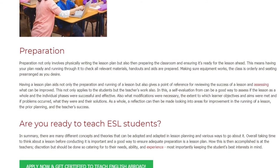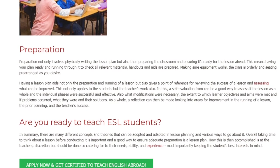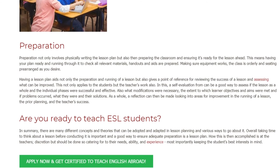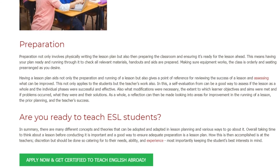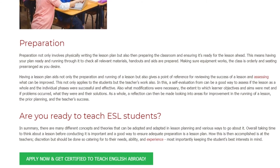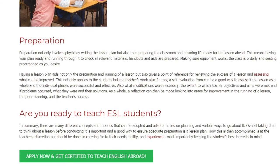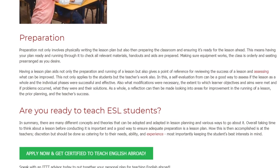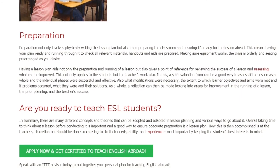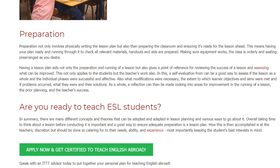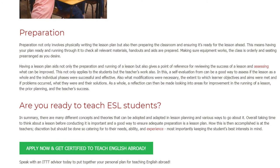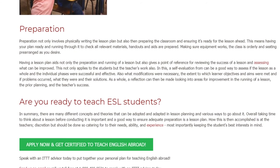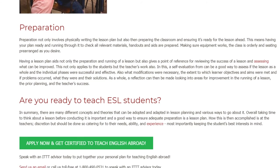Also assessed are what modifications were necessary, the extent to which learner objectives and aims were met, and if problems occurred, what they were and their solutions. As a whole, a reflection can then be made looking into areas for improvement in the running of a lesson, the prior planning, and the teacher's success.